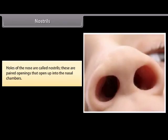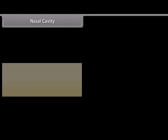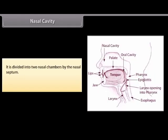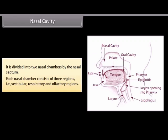Nostrils are the holes of the nose — paired openings that open up into the nasal chambers. The nasal cavity is divided into two nasal chambers by the nasal septum. Each nasal chamber consists of three regions: vestibular, respiratory, and olfactory regions.